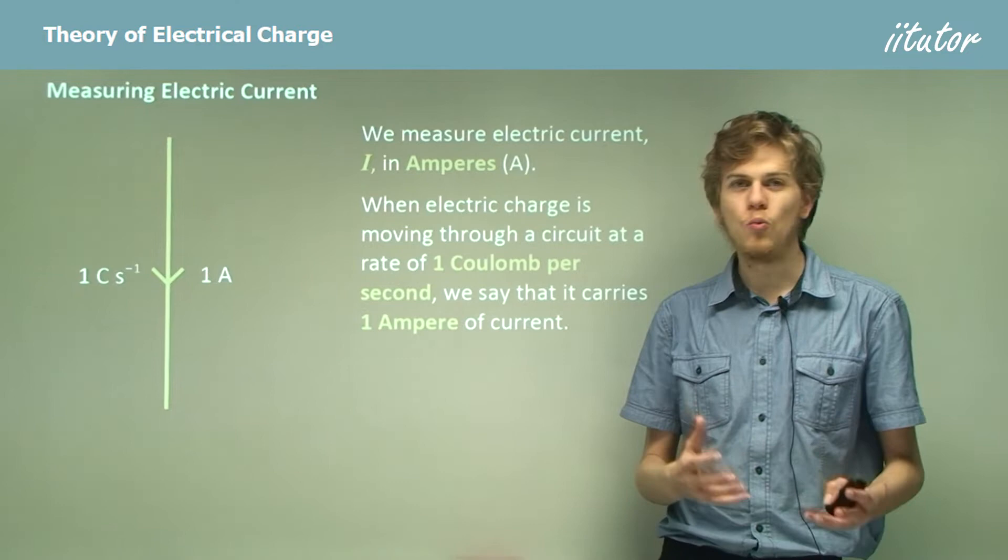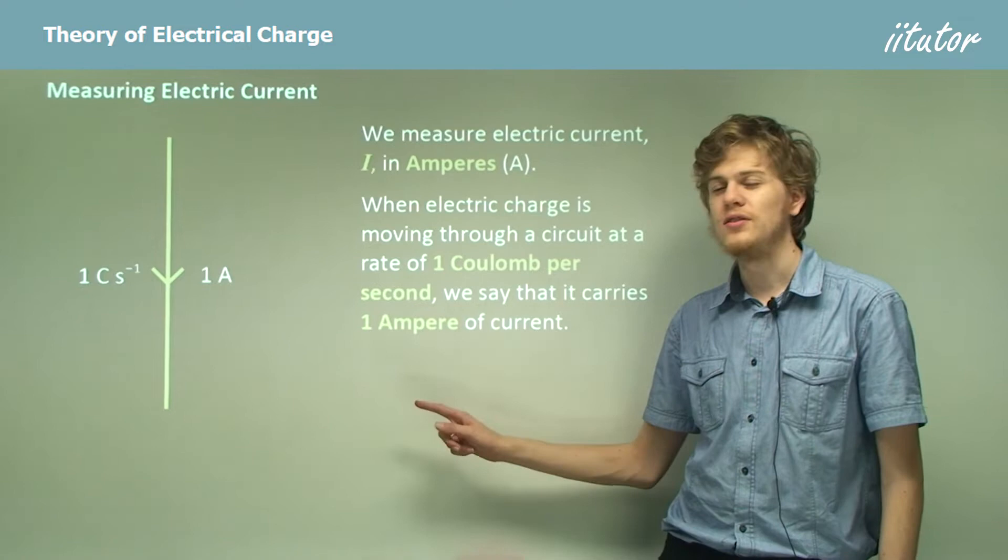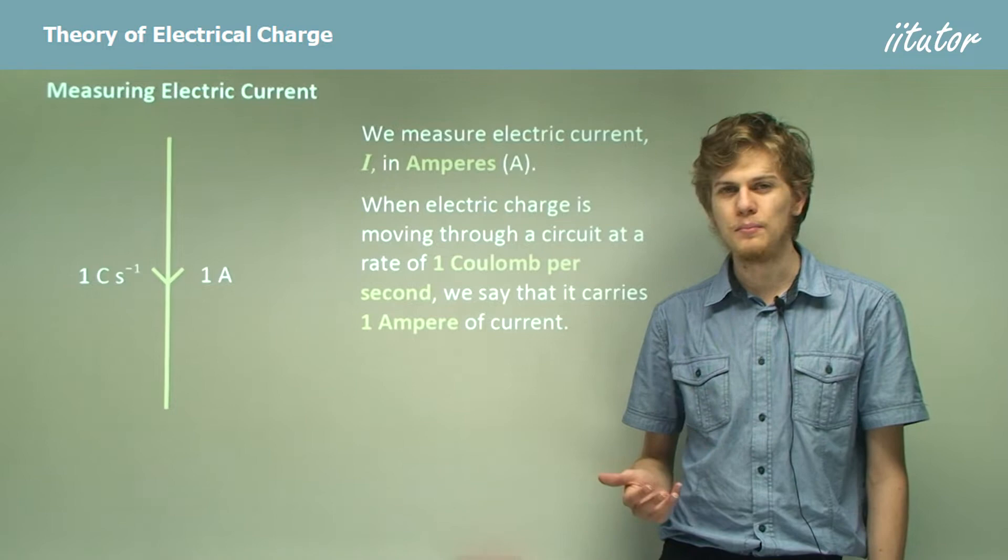Now when an electric charge is moving through a wire at a rate of exactly one coulomb per second, as we can see in this diagram, this is what we call one ampere, or one amp. So this is how the terms relate to each other.